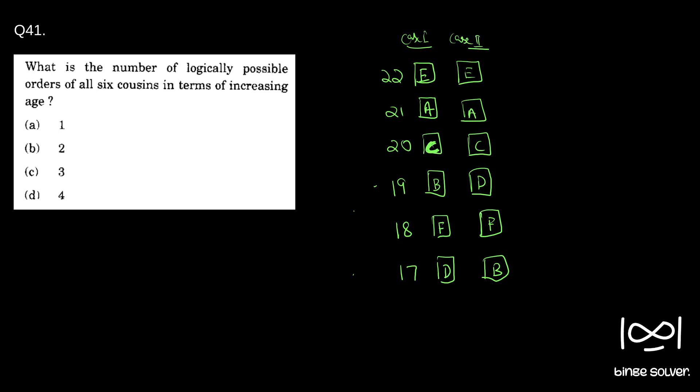Now the question asks, what is the number of logically possible orders of all six cousins in terms of increasing age? So as we have seen, only two cases are possible like this. This is the increasing age order in terms of increasing age. So two cases are possible. So correct answer is B. Solution to question 41 is B, two.